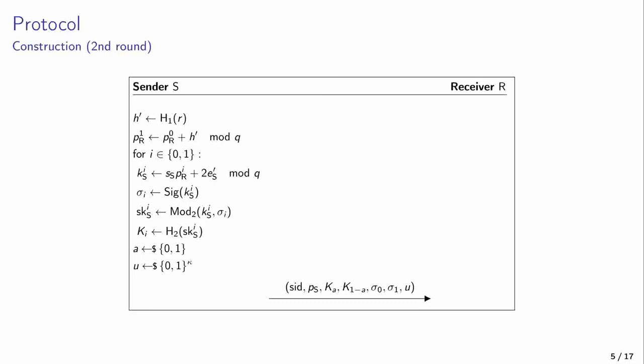It then samples a bit A, which is its contribution to enforce that the output choice bit of the receiver will be uniformly random, as well as a random string U, that must be included in both messages, to force them to be uniformly random as well. The sender sends its key exchange public message, and commits to both reconciled keys, by querying the random oracle on them.